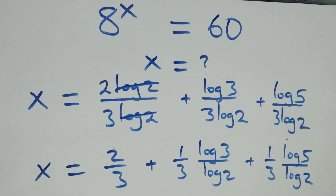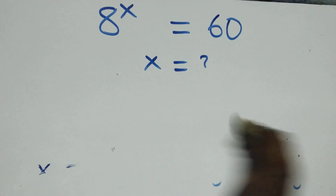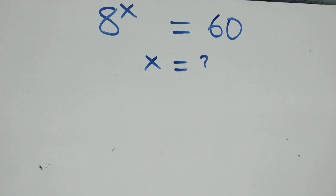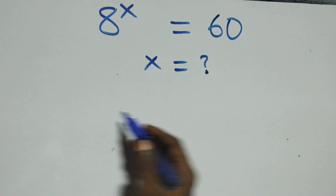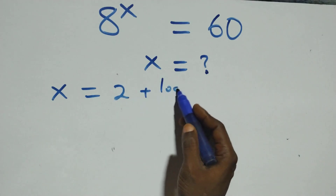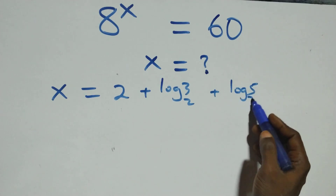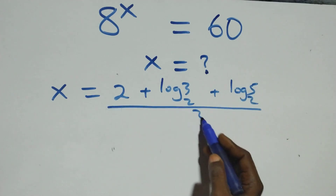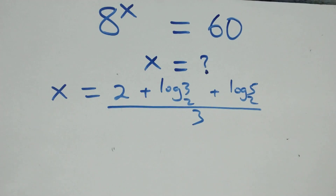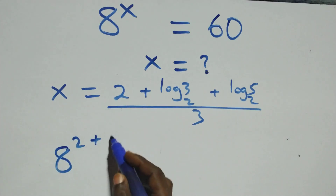Then let's check if this satisfies the given problem — that is, substitute the value of x. The value of x is x equals to two plus log three base two plus log five base two, all over three. What we have here becomes eight raised to power of that quantity.